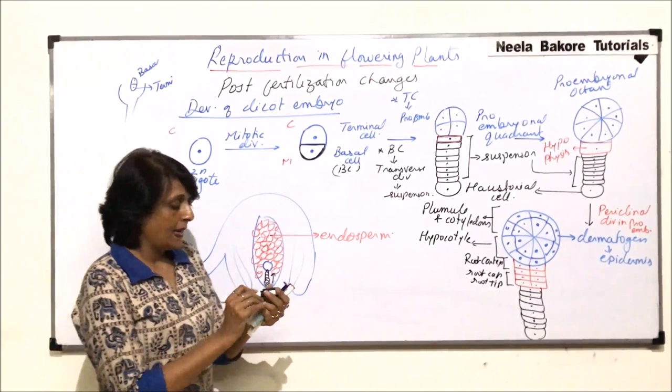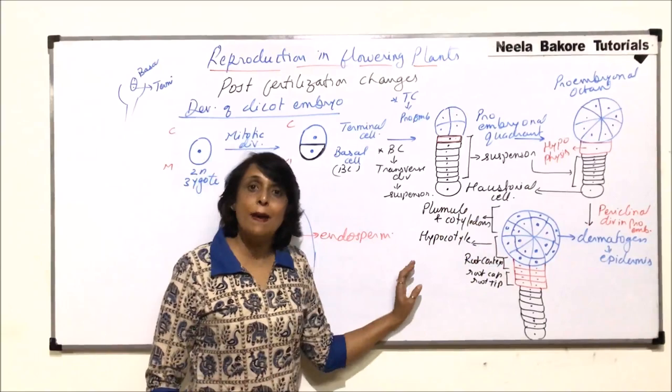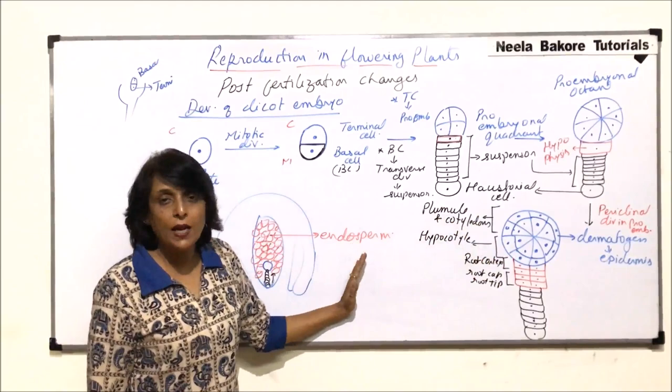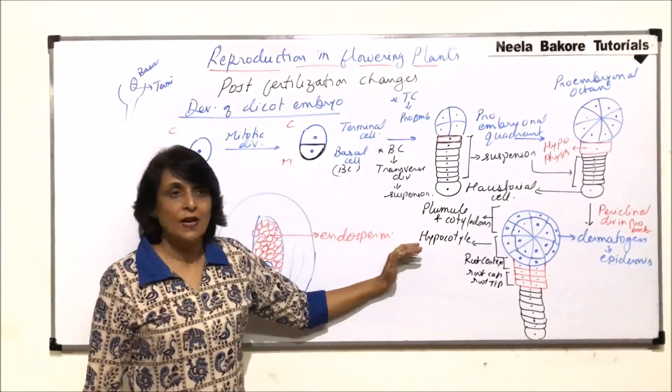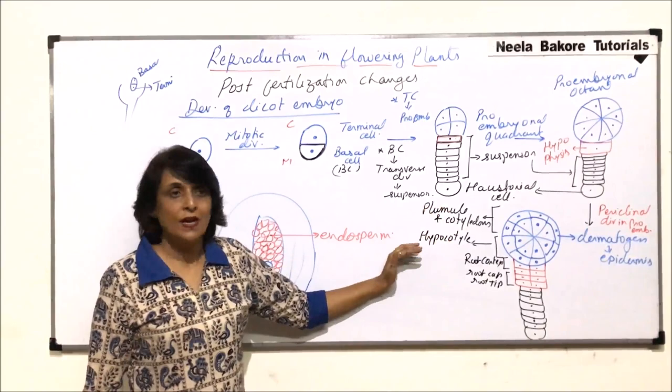This particular form of the embryo is known as globular. There is going to be a change which will take place — not only in shape but also new tissues and structures will appear. That will be discussed in the next part.